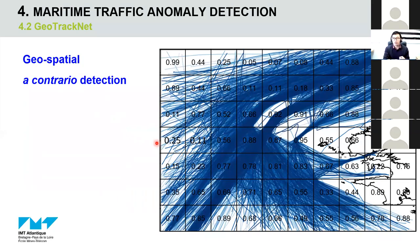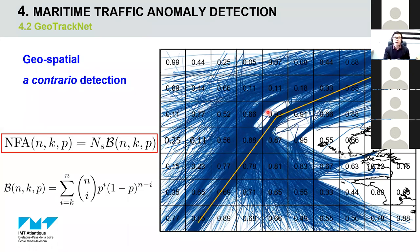To solve this problem, we propose a geospatial a contrario detector. Specifically, we divide the region of interest into small cells. In the test phase, we compare the probability of AIS messages with those in the same cell only. We use the NFA — Number of False Alarms — as the indicator of normality. It is the sum of the binomial tail over every possible segment of the trajectory. P is the probability that one message is an anomaly in this cell. A more common event always has lower NFA than a less common event.